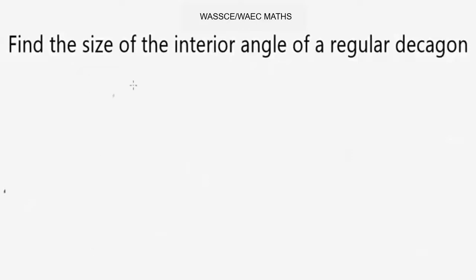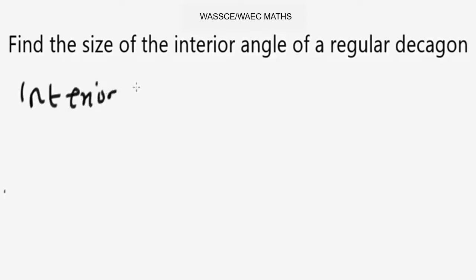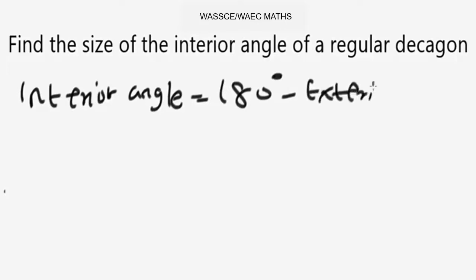Now let's look at this practice problem: find the size of the interior angle of a regular decagon. If you feel confident, pause the video and try it yourself. A hint: a decagon is a 10-sided polygon. Use this hint and figure it out. We will apply the formula: interior angle equals 180 degrees minus the exterior angle.